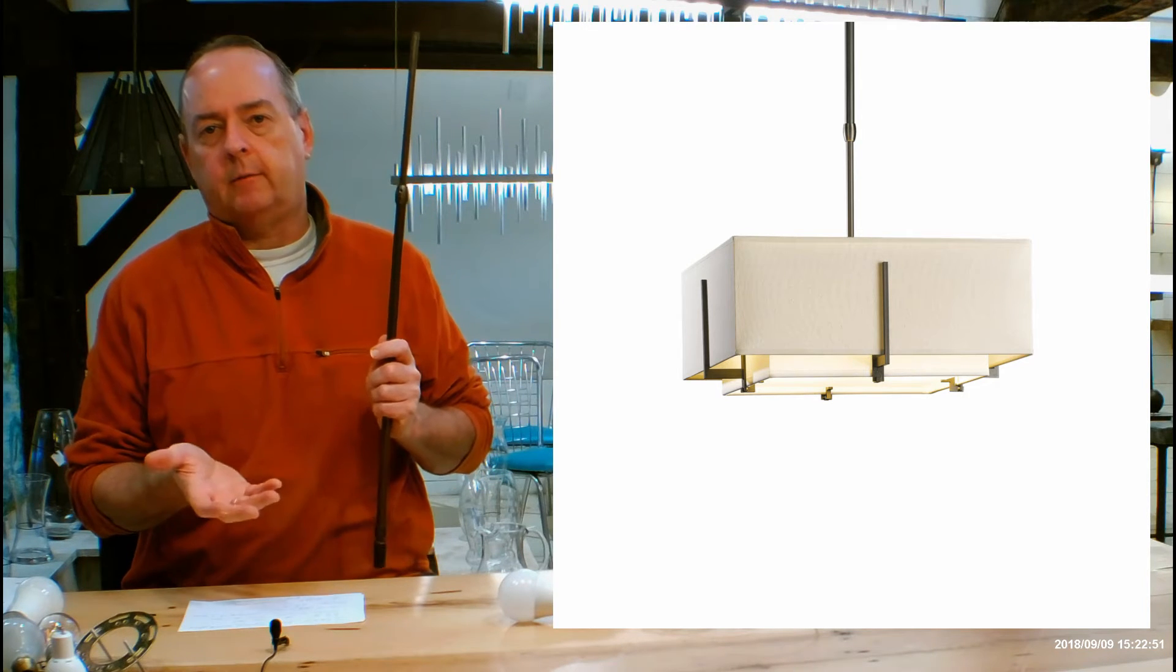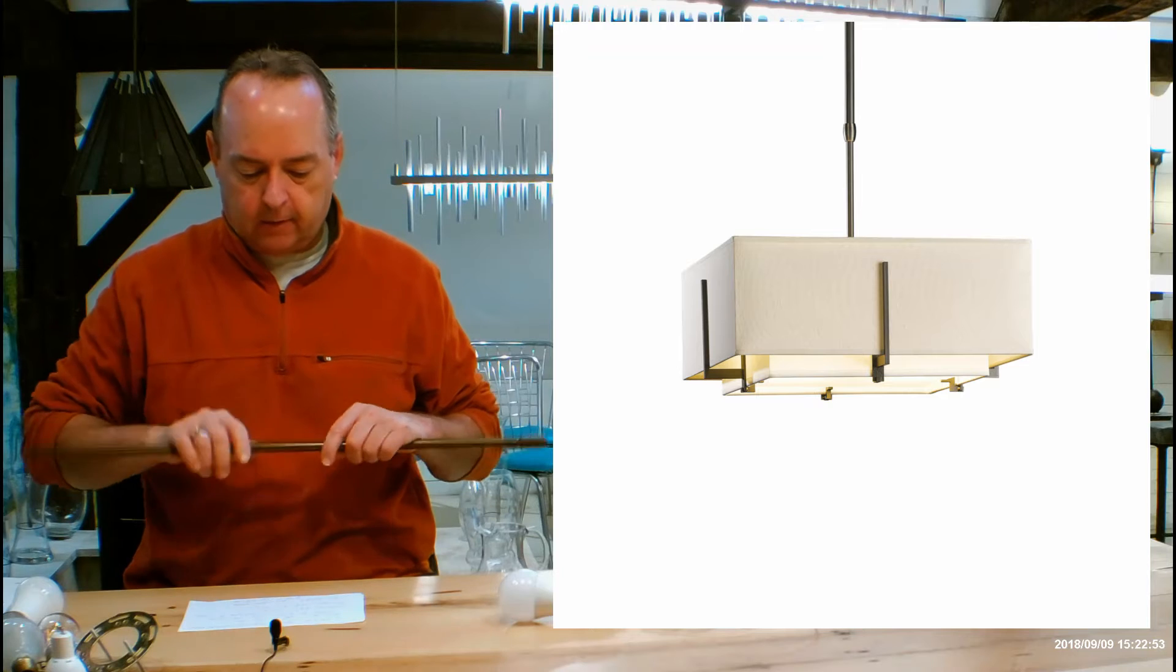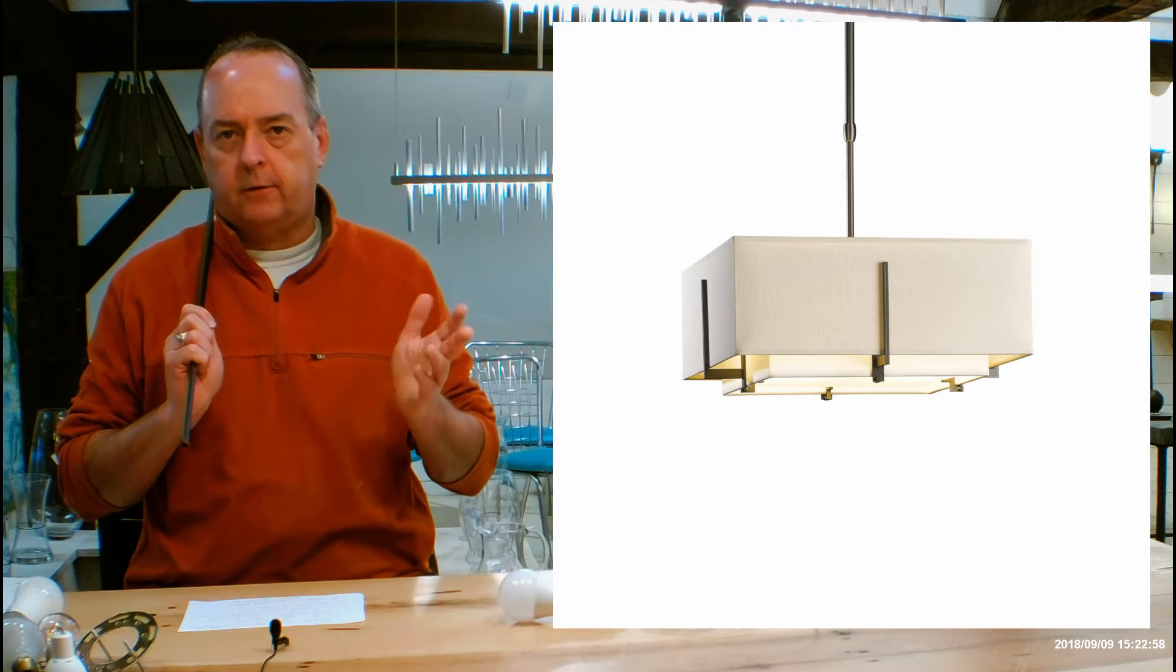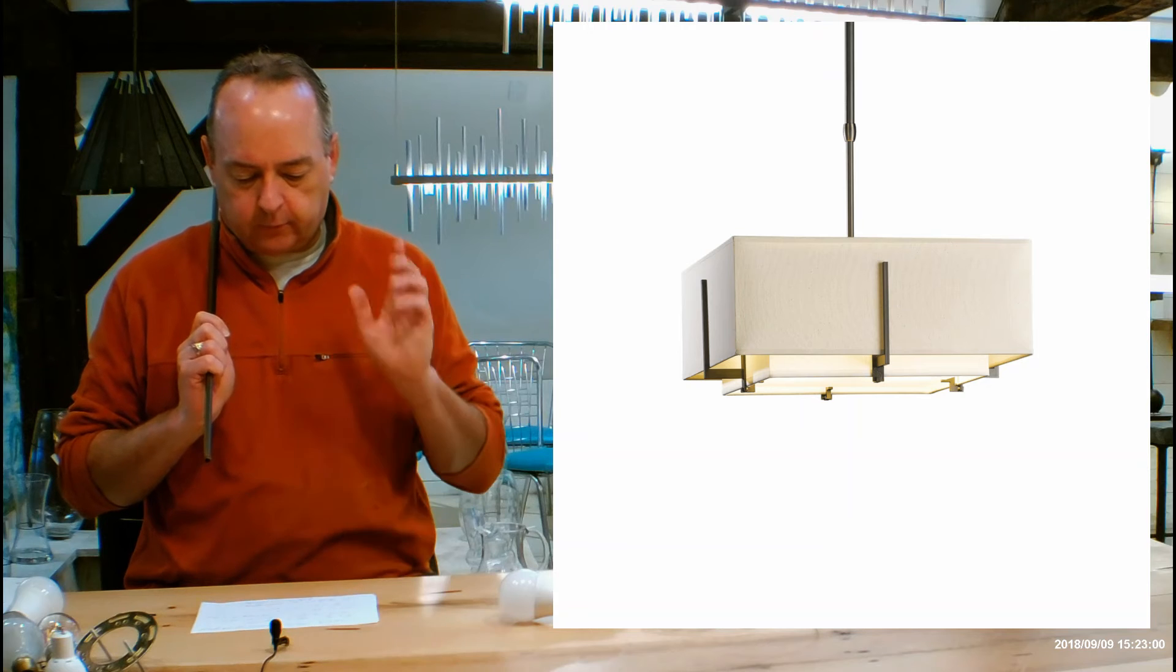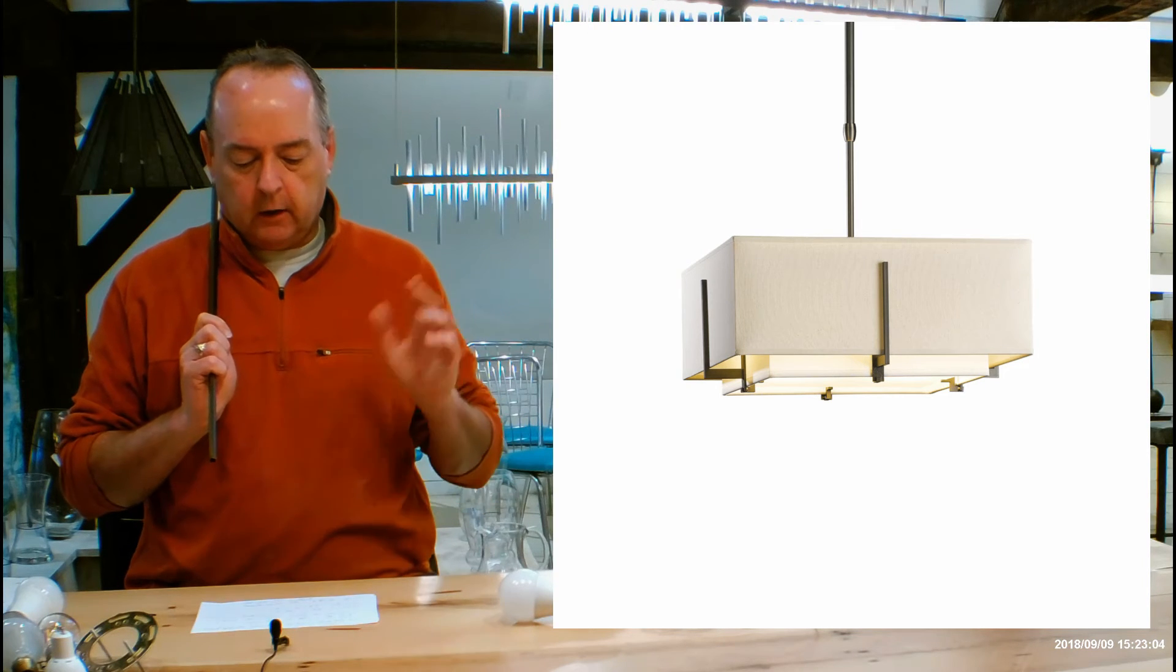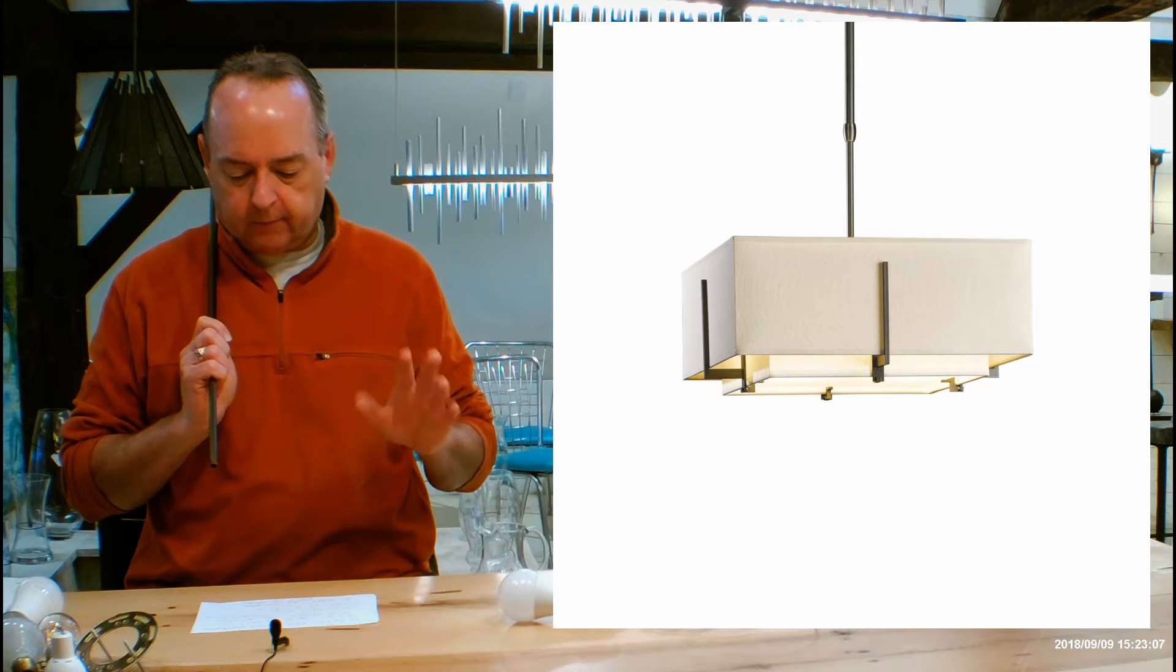I'm really talking about from the bottom of the fixture to the ceiling itself. So there are two on this. You'll notice on a lot of other pendants there are three, but on this one there are two. Starting off we have the standard is 28 to 44.5 inches. Long is 37.7 to 54.1 inches.